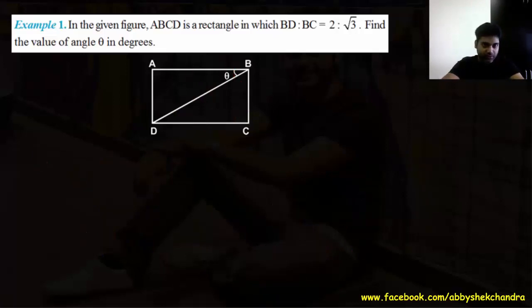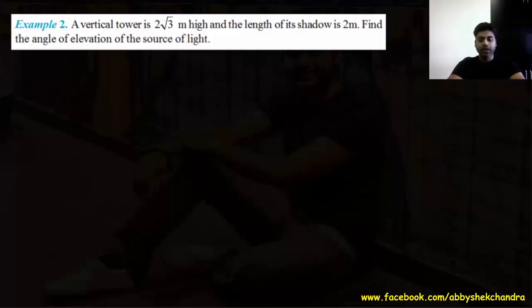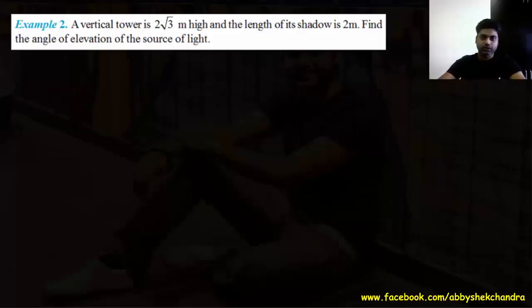Let's move on to the next question. Question 2: a vertical tower is 2 root 3 meters high and the length of its shadow is 2 meters. Find the angle of elevation of the source of light. In any heights and distances question, it's very important to understand the question nicely and then draw the figure correctly. If the figure is correct, half your problem is solved.